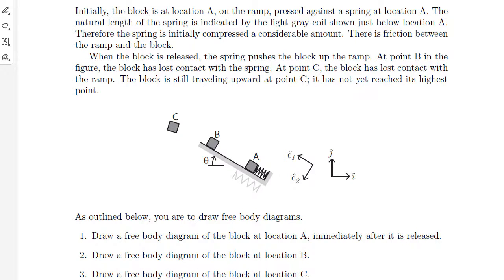Let's get some more practice drawing free body diagrams. A block is located at point A on a ramp and is being held pressed against a spring. The natural length of the spring is indicated in light gray below it, so the natural length is much longer than the compressed length when the block is at position A — therefore this spring is initially compressed a considerable amount.